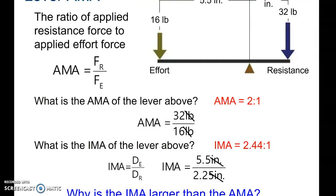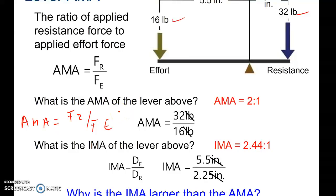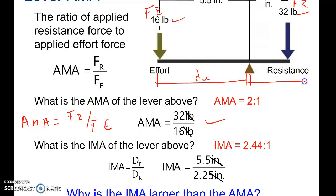Here's an example where all the values — forces and distances — have been given. To find the AMA, remember AMA equals FR over FE. To find the IMA, the distance from fulcrum to effort is DE and from fulcrum to resistance is DR, so we take the ratio DE over DR.